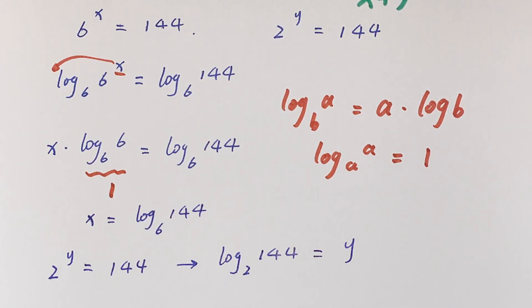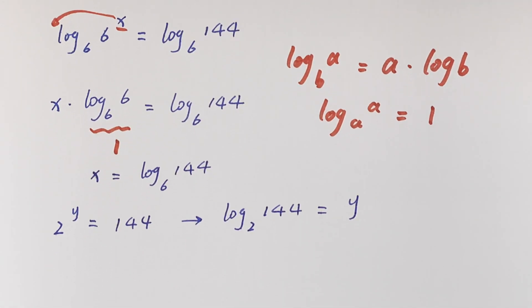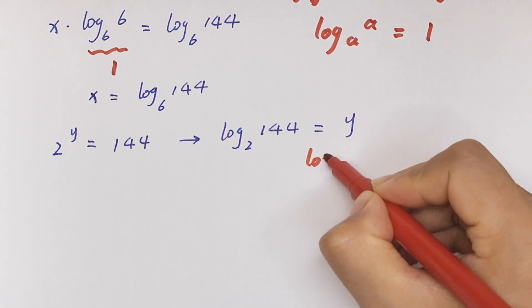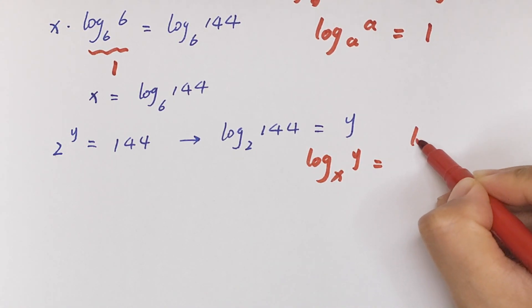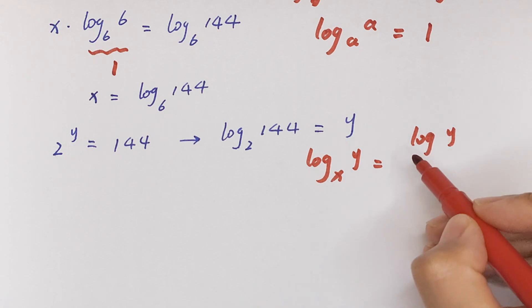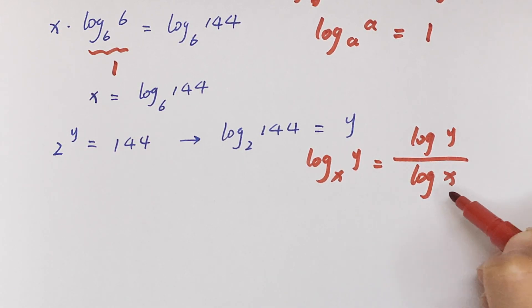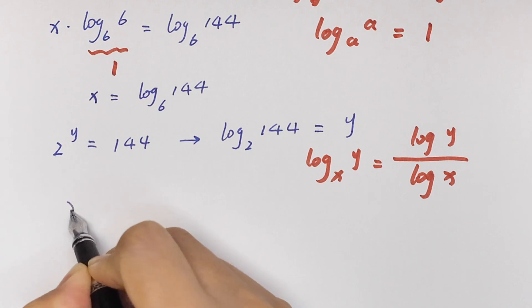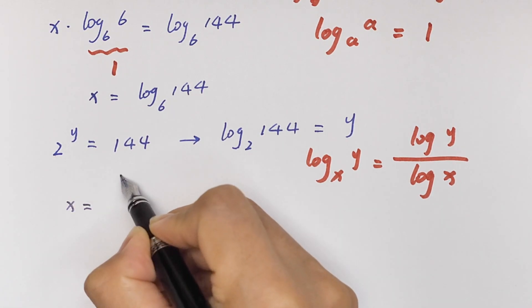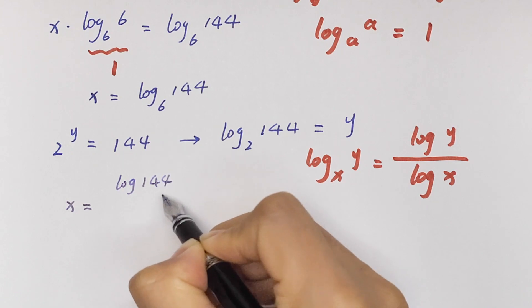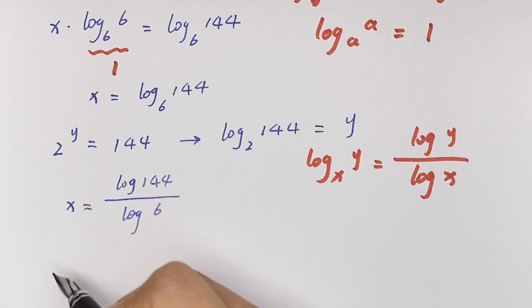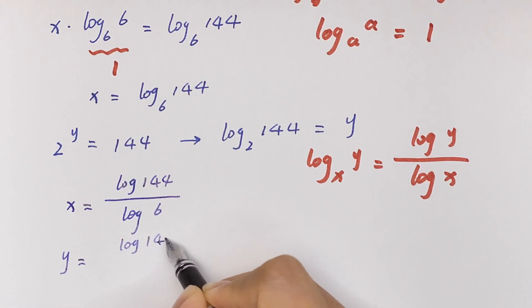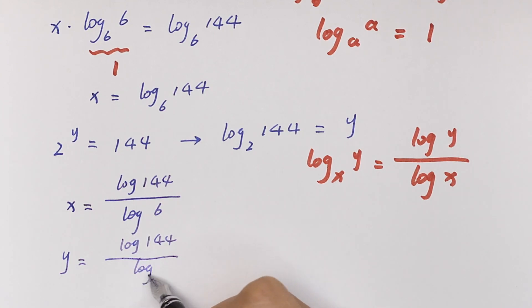So we are going to use the change of base formula. Log base x of y is equal to log y over log x. So x equals log 144 over log 6, and y equals log 144 over log 2.